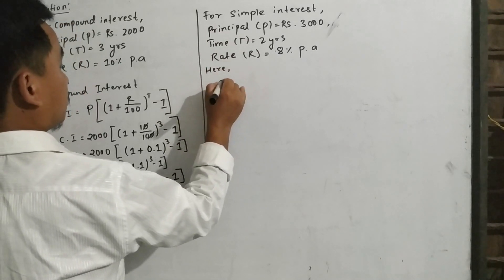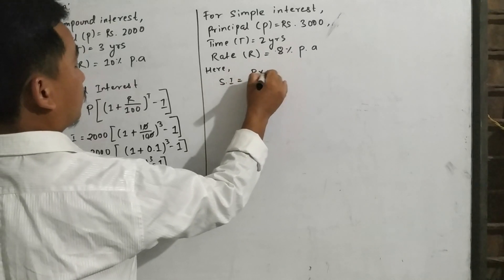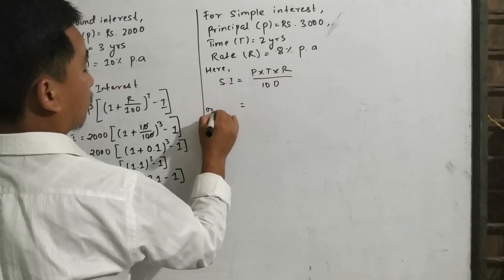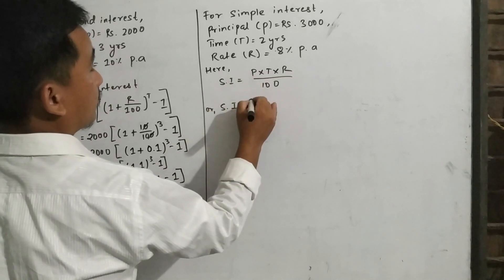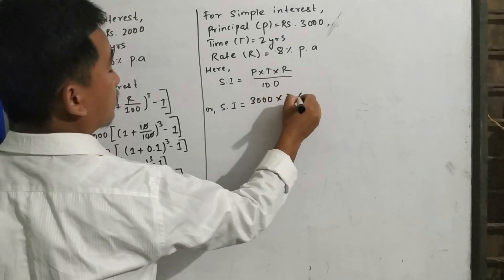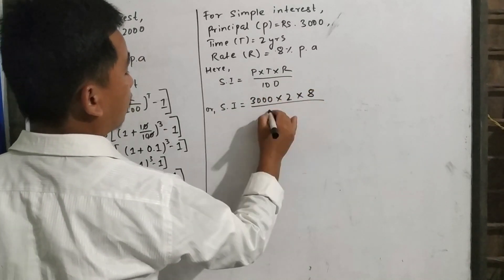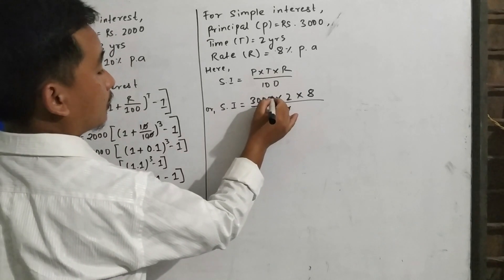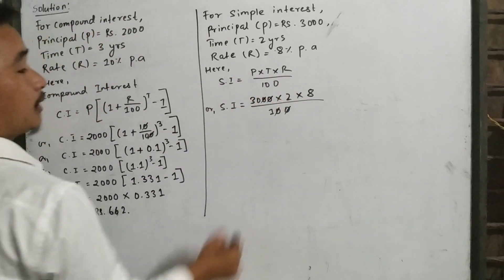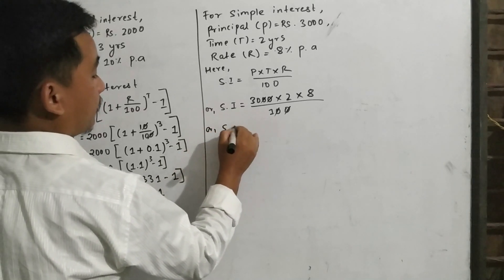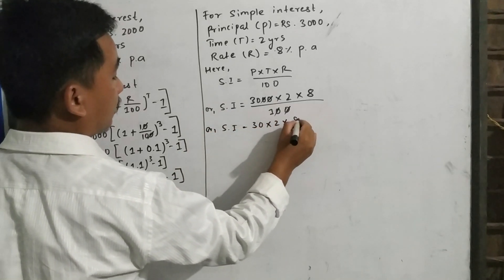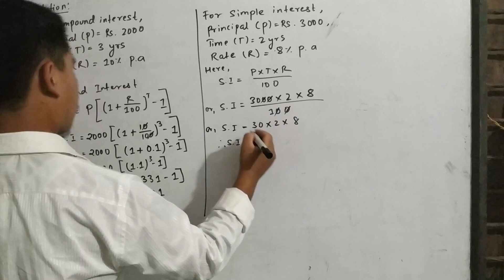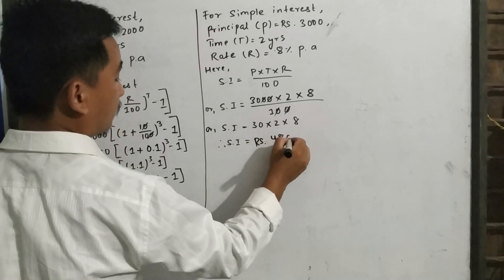Simple interest is equal to P × T × R / 100. Substituting: SI = 3000 × 2 × 8 / 100. Since all are in multiplication form, two zeros from the numerator and denominator can be cancelled, leaving 30 × 2 × 8. Therefore, simple interest is equal to rupees 480.